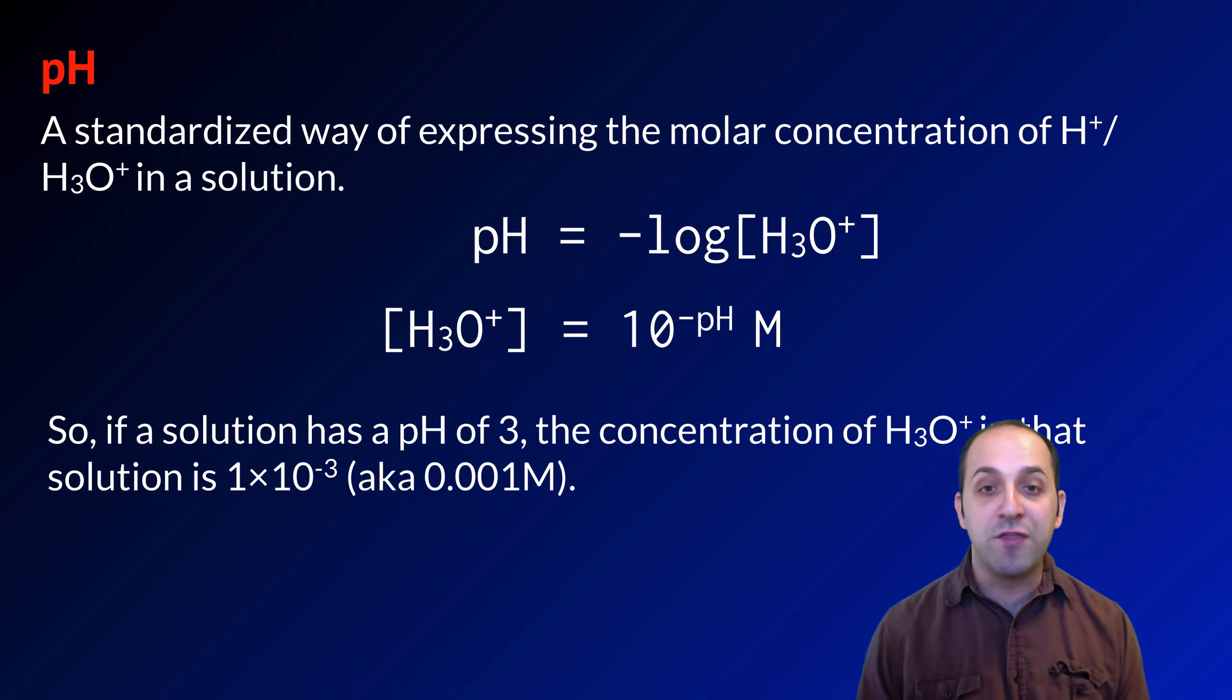In other words, if a solution has a pH of 3, that means that the concentration of H3O-plus in that solution is 1 times 10 to the negative third molar, also known as .001 molar. Does this make sense? If not, take a moment and write down any questions before we talk about why.